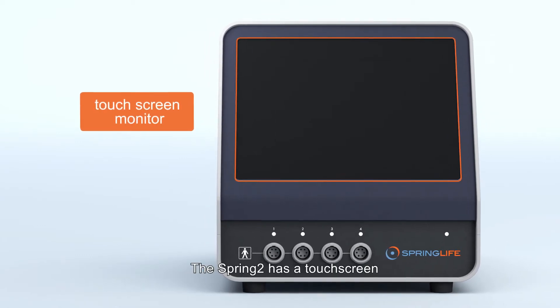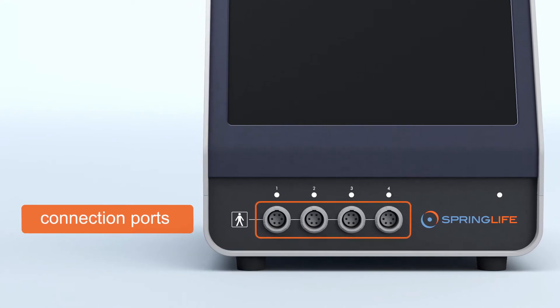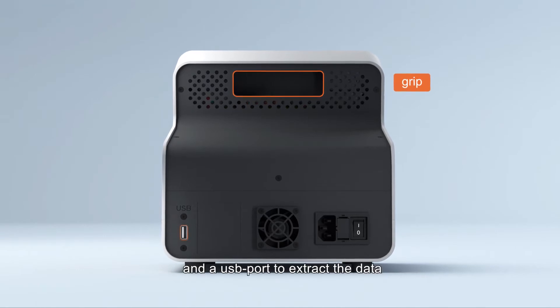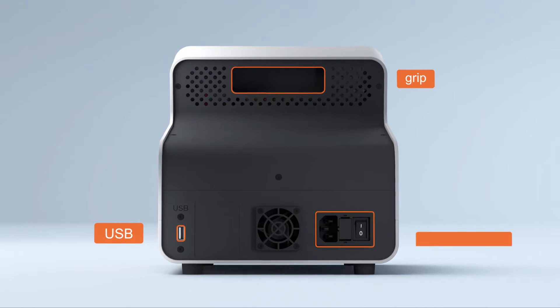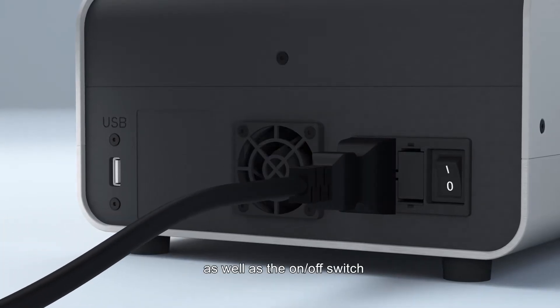The Spring 2 has a touchscreen and four connection ports with indicator lights on the front. On the back there is a grip for easy handling and a USB port to extract the data of last performed treatment. This is also where the power cable port is located as well as the on-off switch.